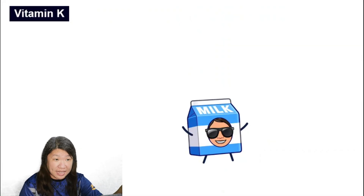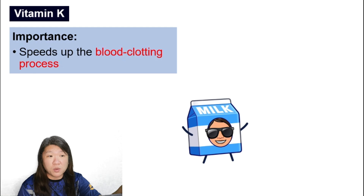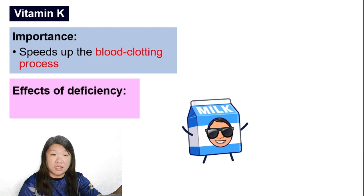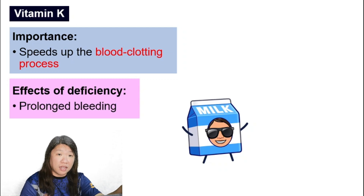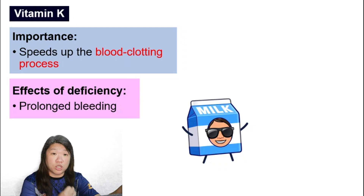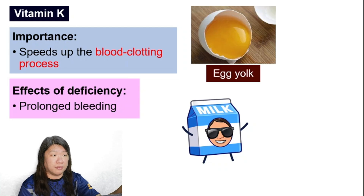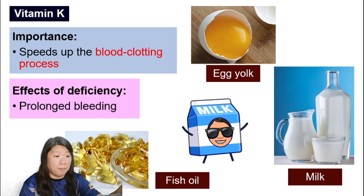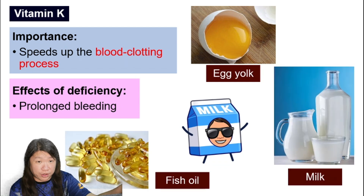Vitamin K is important for speeding up the blood clotting process. Not having enough vitamin K can cause prolonged bleeding, meaning it is hard to stop bleeding because the blood has trouble clotting. Sources of vitamin K include egg yolk, milk, and fish oil.